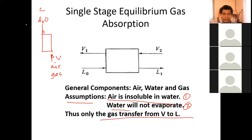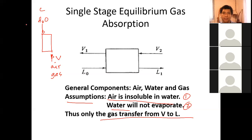How do we justify these assumptions? For air insoluble in water: from our first problem, the mole fraction of air in water is on the order of 10⁻⁶. That's very small — less than 0.01%. Multiply by 100 and it becomes 10⁻⁴%. Empirical data shows that air is practically insoluble in water.